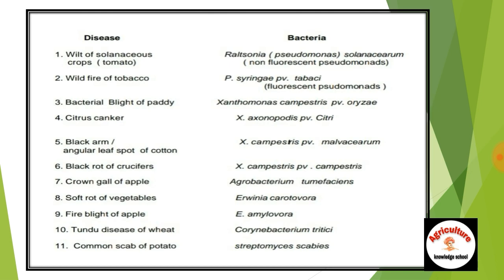Important diseases caused by bacteria: No. 1 — wilt of solanaceous crops, caused by Ralstonia (Pseudomonas) solanacearum, a non-fluorescent pseudomonad. No. 2 — wildfire of tobacco, caused by Pseudomonas syringae pv. tabaci. No. 3 — bacterial blight of paddy, caused by Xanthomonas campestris pv. oryzae. No. 4 — citrus canker, caused by Xanthomonas axonopodis pv. citri. No. 5 — black arm or angular leaf spot of cotton, caused by Xanthomonas campestris pv. malvacearum. No. 6 — black rot of crucifers, caused by Xanthomonas campestris pv. campestris.